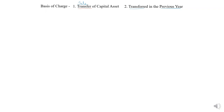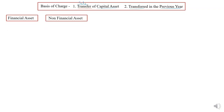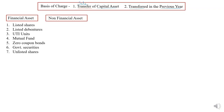Now understanding capital asset, we should know that there are two types of capital asset. One is financial asset and the other is non-financial asset. Financial asset includes listed securities, listed shares, listed debentures, UTI units, mutual fund, zero coupon bond, government securities, and unlisted shares. These are the list of financial assets.